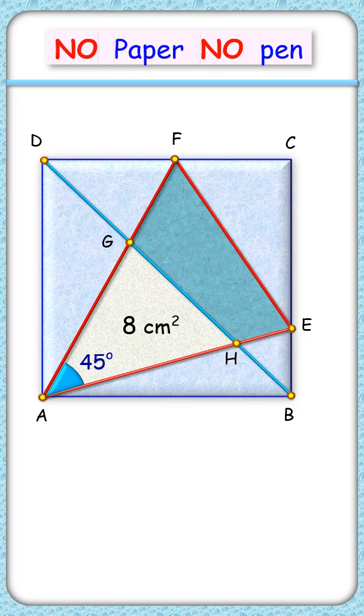Without using any paper or pen, can you find the area of this quadrilateral where given is a square and angle FAE is 45 degrees?